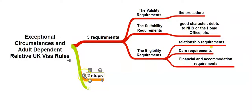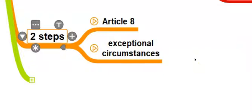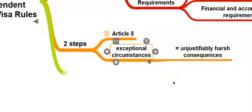In particular, they have to take two steps. The first step is to check if you engaged Article 8 of the European Convention on Human Rights in your application. Article 8, in simple terms, is your right to respect for private and family life. And once they have established that the Article 8 element exists in the application, they should take the second step and consider whether or not there are any exceptional circumstances in your case that would render refusal a breach of Article 8, because it would result in unjustifiably harsh consequences for you and your family.